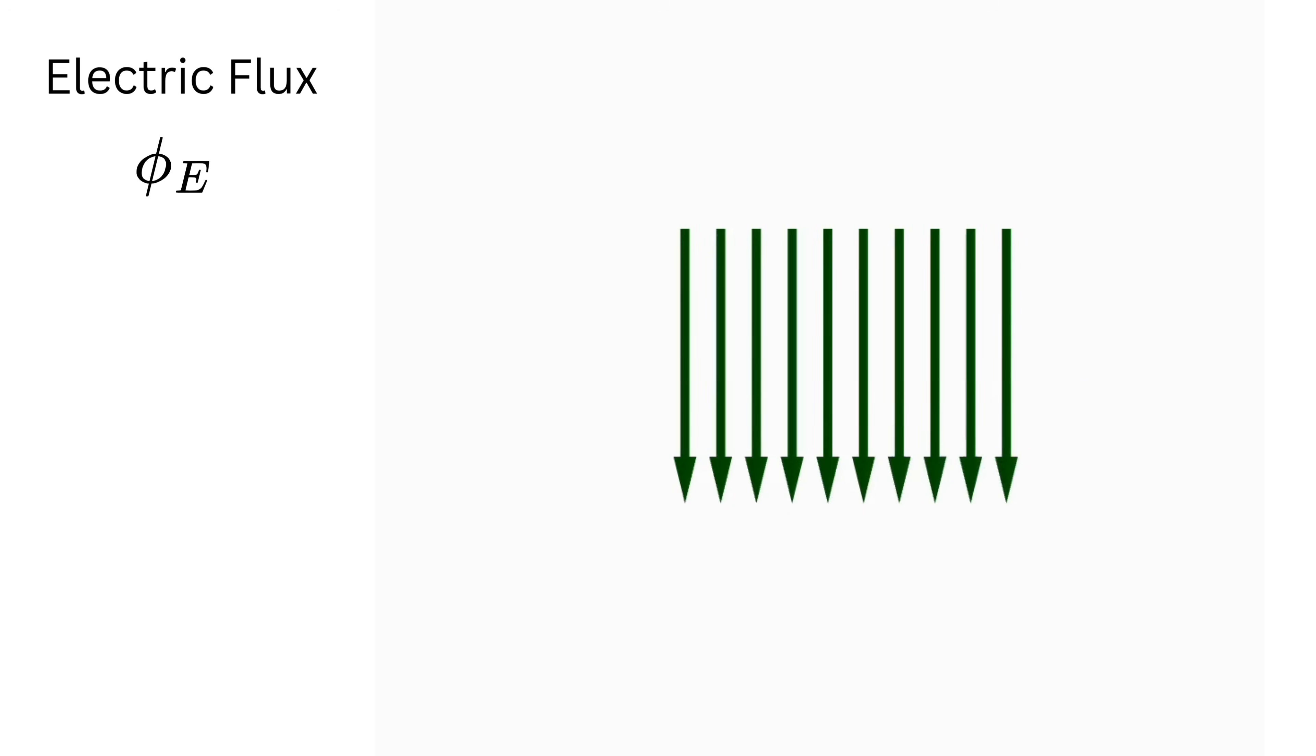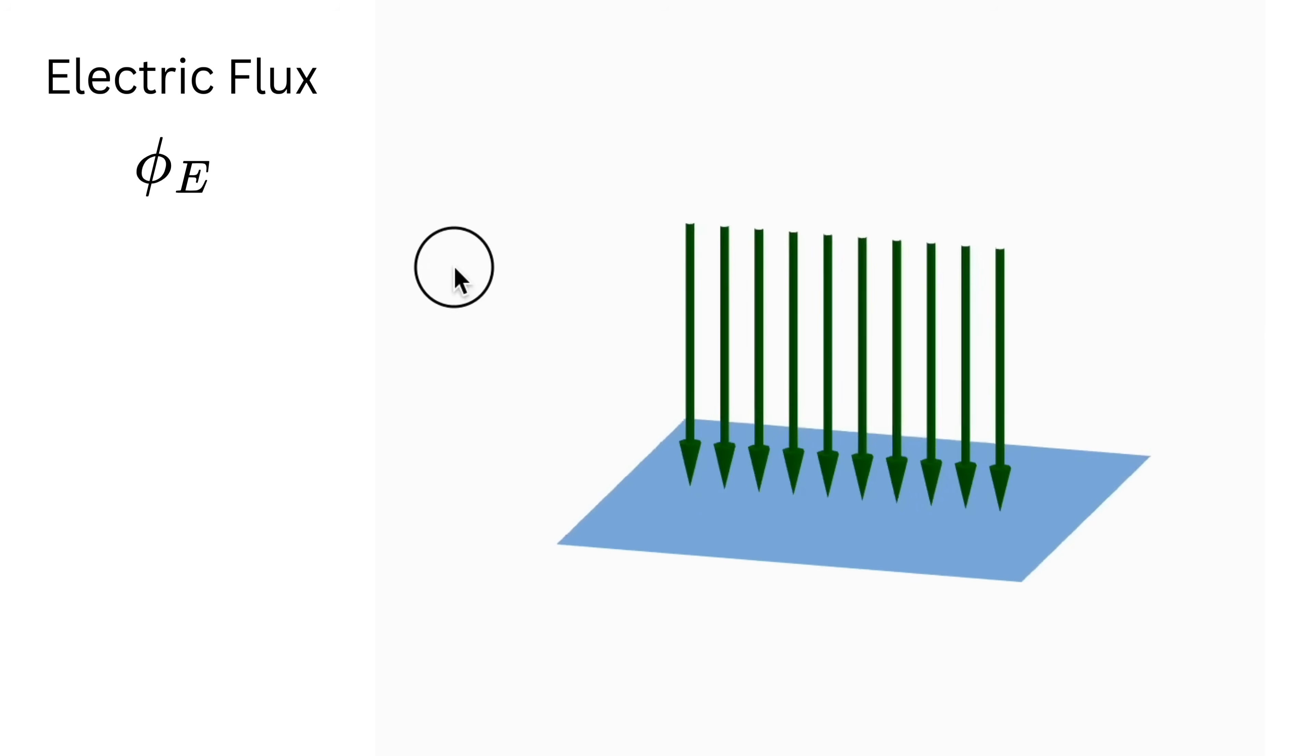Also imagine the same 10 arrows pointing toward a small square sheet. Maybe only four arrows pass through because the sheet is small. Now replace it with a sheet twice as big in the same position. Now eight arrows might pass through it, so the flux is larger. Hence electric flux depends on three things: the number of field lines or the strength of the electric field, then the angle between the field lines and the sheet, and the area of the sheet.